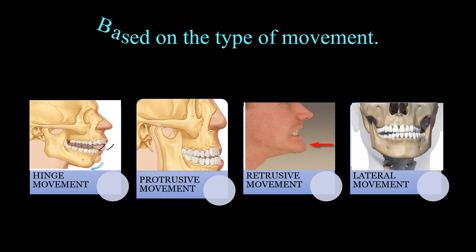Based on the type of movement, mandibular movements can be hinge movement, protrusive movement, retrusive movement, and lateral movement. The hinge movement is a purely rotational movement of the joint which takes place along the horizontal axis. It occurs up to 10 to 13 degrees of rotation of the condyle, with a separation of 20 to 25 mm in the incisal region.